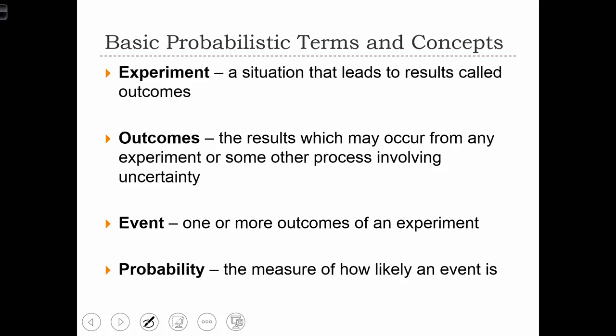Outcomes are the results which may occur from any experiment, but an outcome might also occur as a result of some other process that involves uncertainty, some of our probabilistic processes.